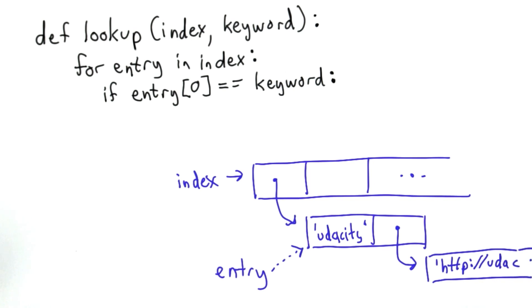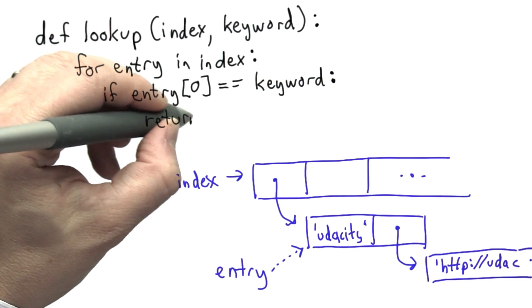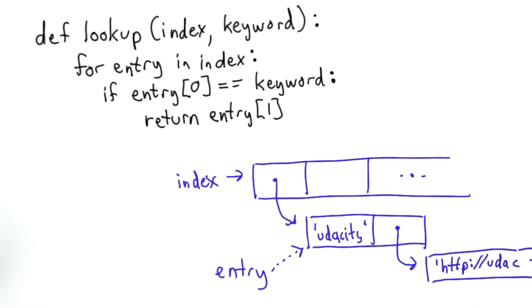When we were defining add_to_index, what we did when we found a match was append the URL to the list of URLs associated with that keyword. What we want to do for lookup is different. All we need to do for lookup now is return the list of URLs, and we can find that by looking in position 1 of entry.